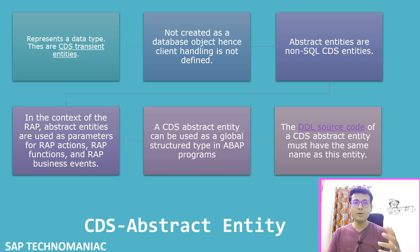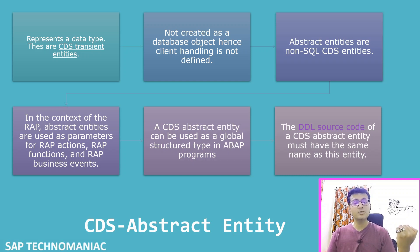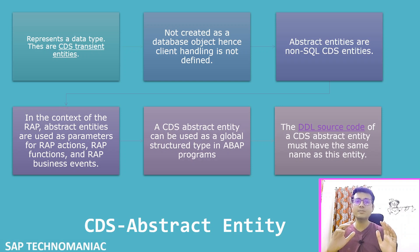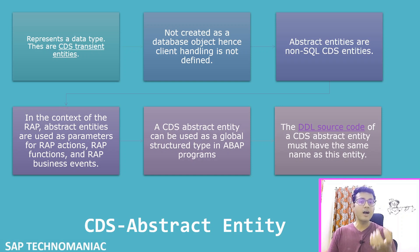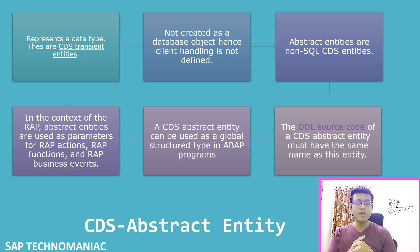That is the reason SAP came up with the CDS abstract entity. The real use case of the CDS abstract entity, as seen currently, is in RAP — it defines only the data type. It will not be used to get data from the database; you can't use it as a source in a SELECT statement.